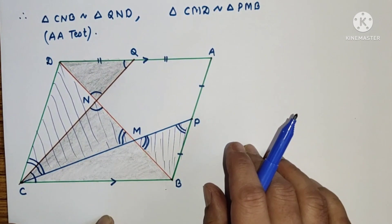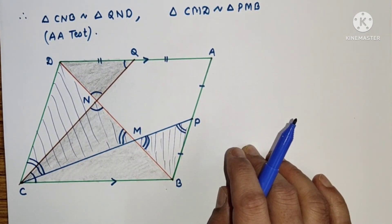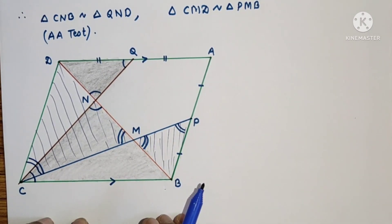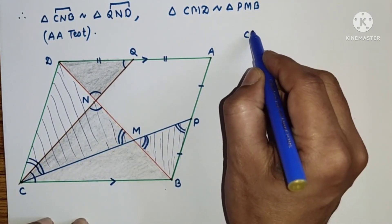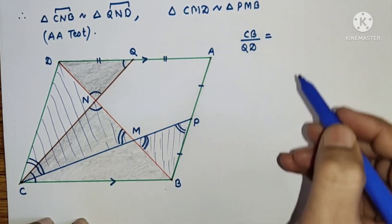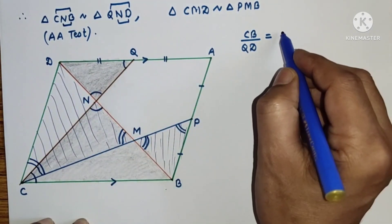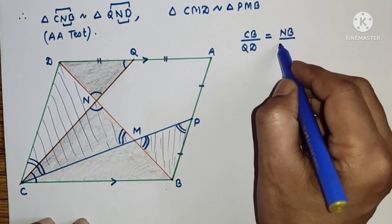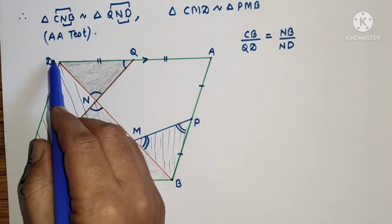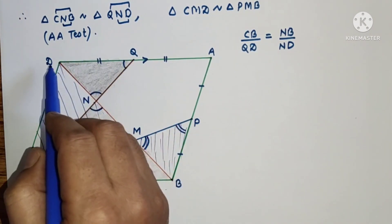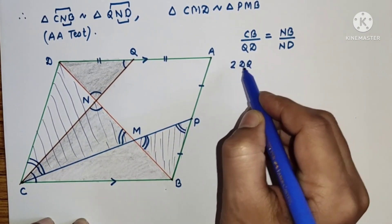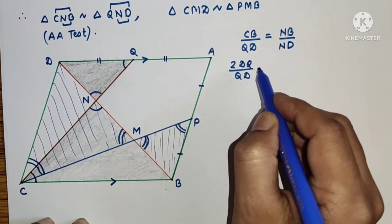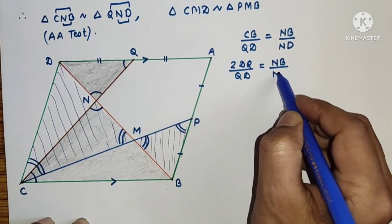Since corresponding sides of similar triangles are proportional, from the first pair we can say that CB by QD is equal to NB by ND. Now DQ is half of CB because Q is the midpoint of DA, and DA and CB are equal, so DQ is half of CB, meaning CB equals 2DQ.